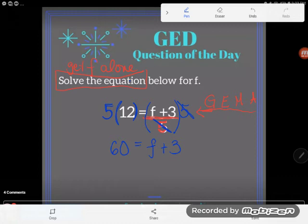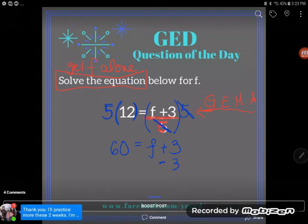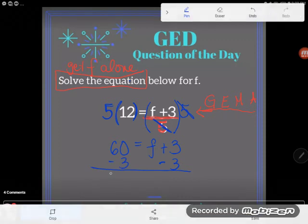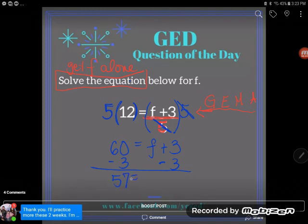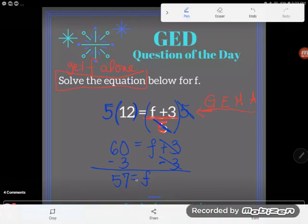You can see that it's just a real simple step now to do the opposite of adding 3. And I'm going to do that to both sides because it's a change I'm making. So that I now get 60 minus 3 is 57. And on this side adding 3 and subtracting 3 cancel so that my f is alone. And I can see that 57 is equal to f.